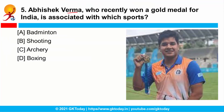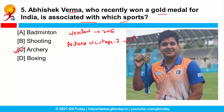Question number 5: Abhishek Verma, who recently won a gold medal for India, is associated with which sport? Recently, Abhishek Verma created history by becoming the first man ever to win two World Cup gold medals in individual compound archery. He had earlier won gold at the individual event in Rokla in 2015, and recently won his second gold in the men's individual compound event at the Archery World Cup Stage 3, held in Paris.